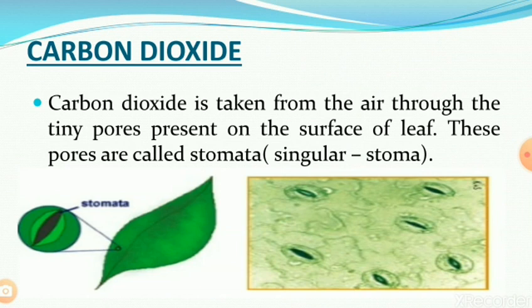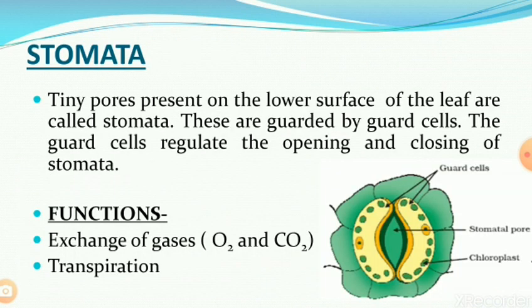These pores are called stomata, as shown in the figure. Stomata are tiny pores present on the lower surface of the leaf, and they are guarded by guard cells. These guard cells regulate the opening and closing of stomata.